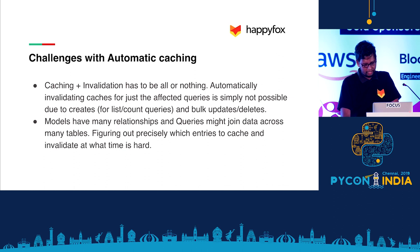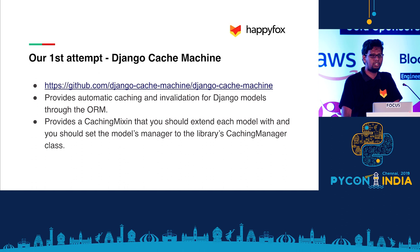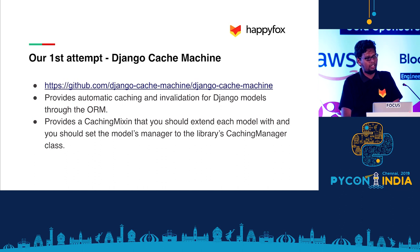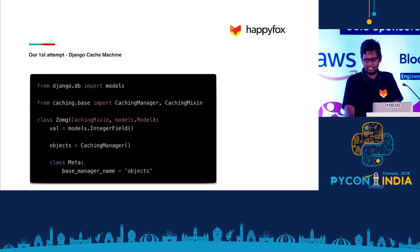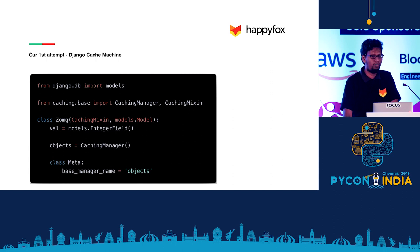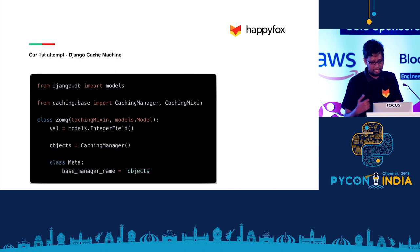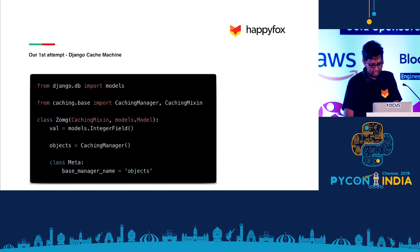Our first attempt was to use a third-party library called Django Cache Machine. What it does is provide a Django model manager. When you write a Django ORM query, you would typically do model.objects.all or filter — that 'objects' represents a model manager. Django Cache Machine provides a mixin and a custom model manager which you have to add to every model. In their documentation example, you extend the mixin and overwrite the objects property with their custom manager.